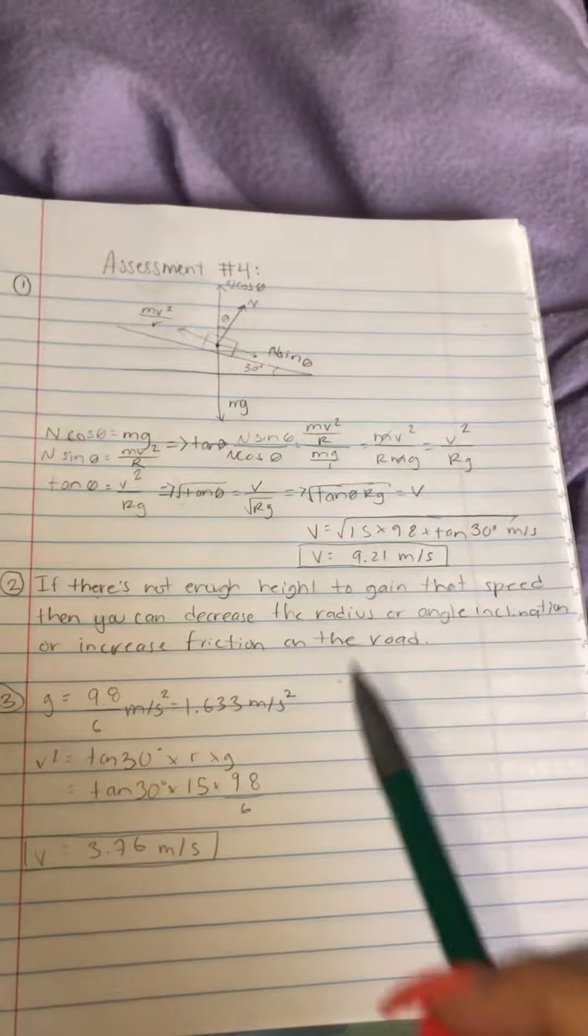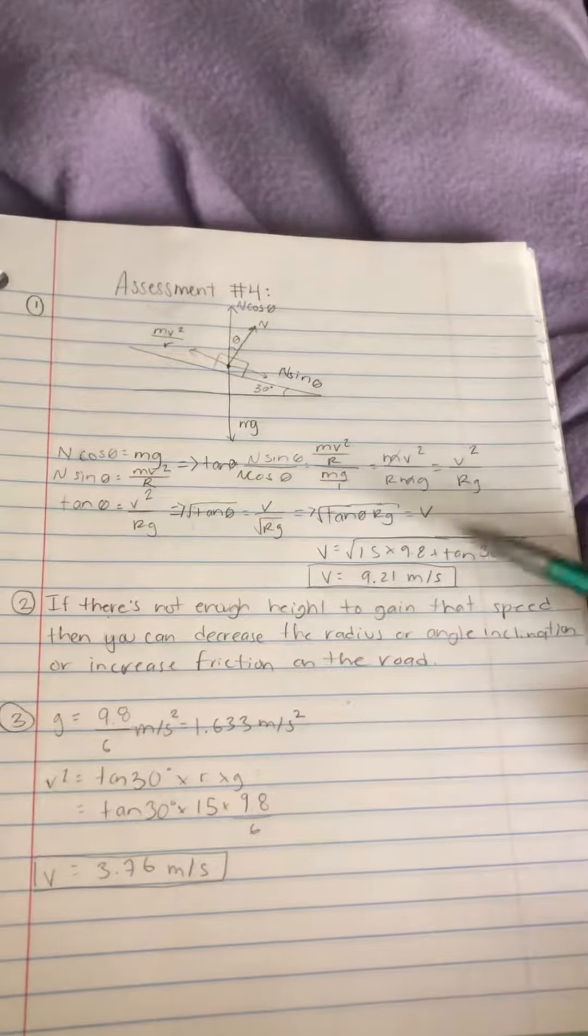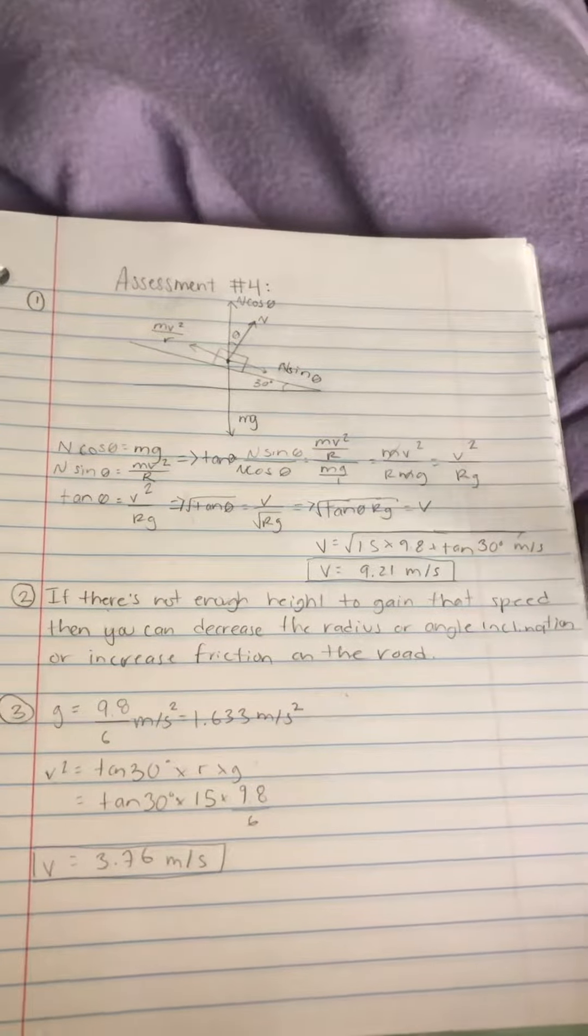Now however, if there's not enough height to gain the speed that is needed, you can decrease the radius or the angle or increase the friction on the road.